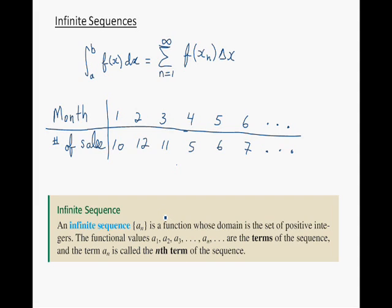Hence, an infinite sequence can be seen as a function where the input values are positive integers — 1, 2, 3, ..., n — going all the way to infinity, and the output values are the terms of the sequence: a1, a2, a3, ..., an, with terms continuing all the way to infinity.